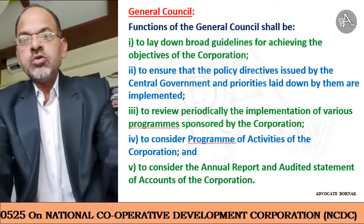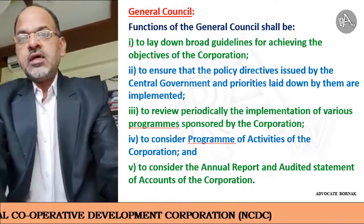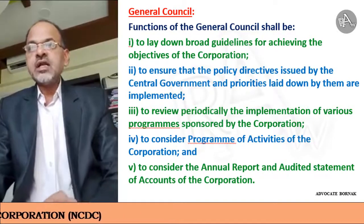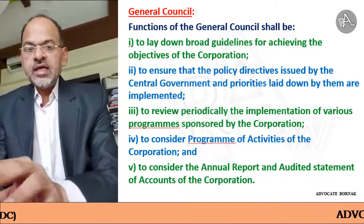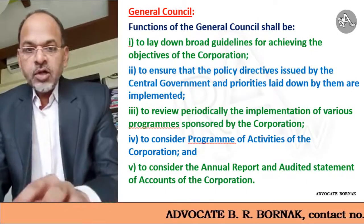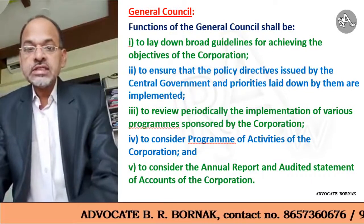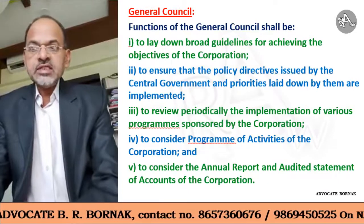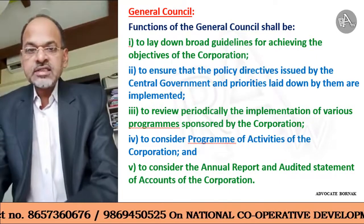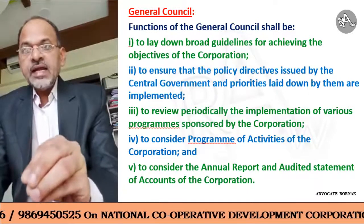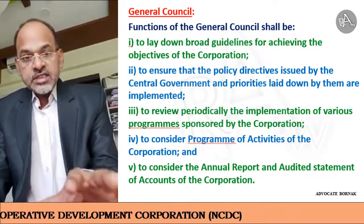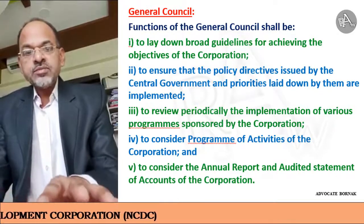The NCDC carries out its functions through the General Council, its boards, and subcommittees. The General Council is the main body and takes policy decisions. Its first function is to lay down broad guidelines for achieving the objectives of the corporation. These broad guidelines — that is, policy decisions — are taken by the General Council to achieve the objectives of the NCDC.